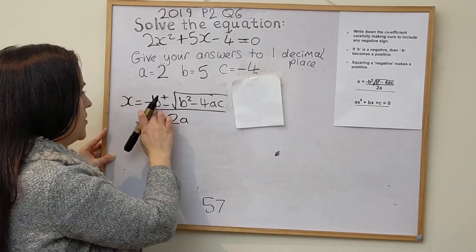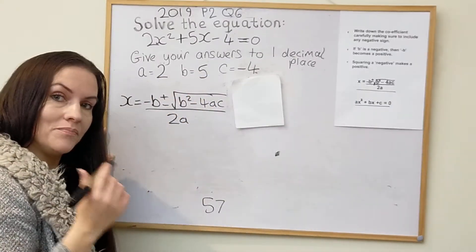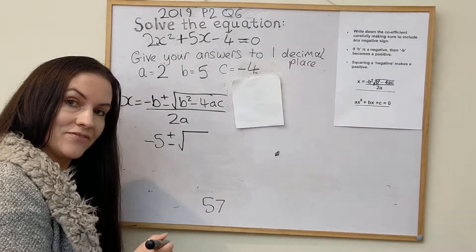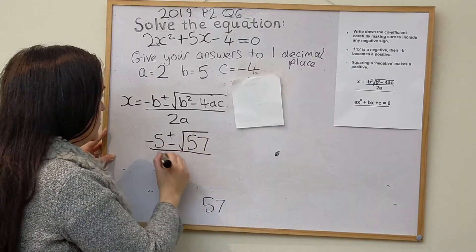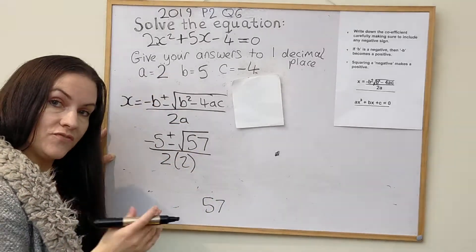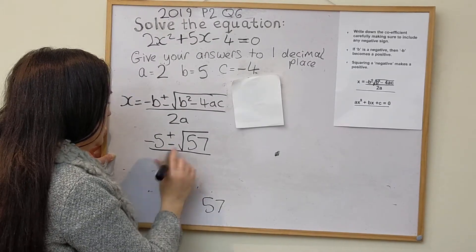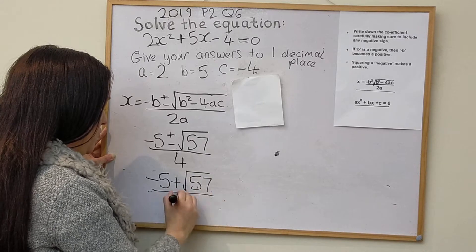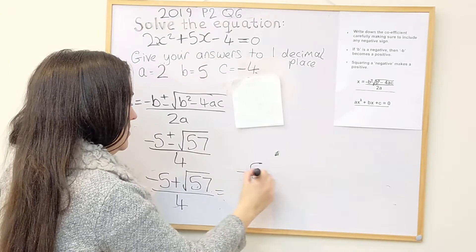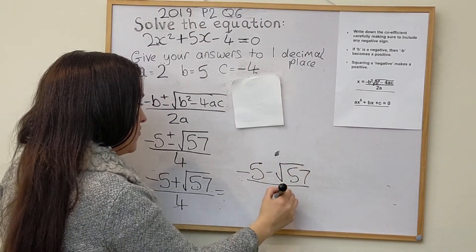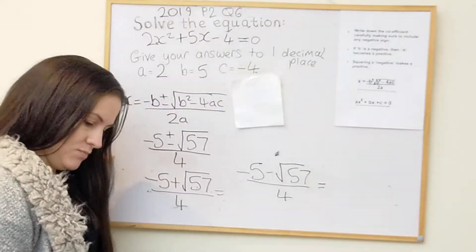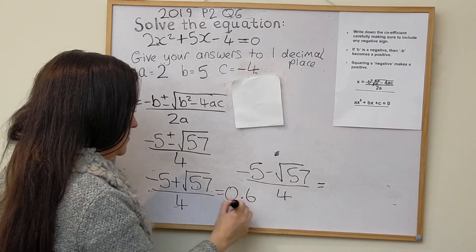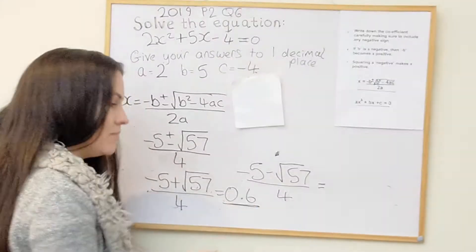Negative b — since b is positive — just becomes negative 5. So we have negative 5 plus or minus root 57, all over 2a, which is 2 times 2, giving 4. We have two separate calculations: negative 5 plus root 57 over 4, and negative 5 minus root 57 over 4. Giving answers to one decimal place: 0.6 and minus 3.1.